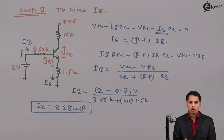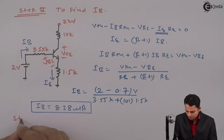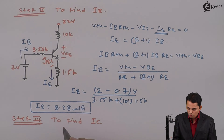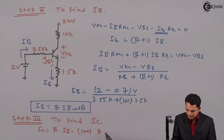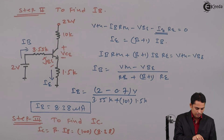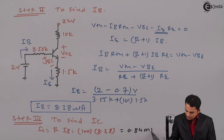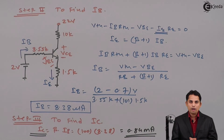From step 2, we have got base current IB. The next step 3 is to find collector current IC, which is given as beta times IB. Hence, 100 multiplied by 8.38 micro amperes, which equals 0.84 milli amperes. From step 3, we have got collector current IC equal to 0.84 milli amperes.